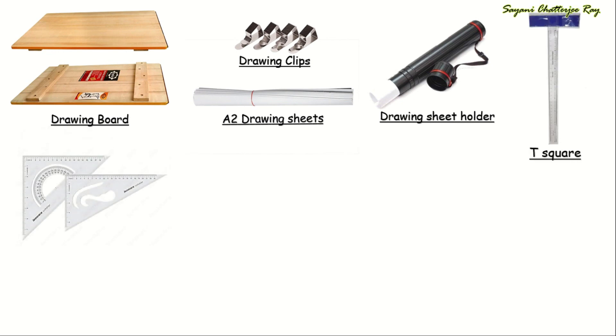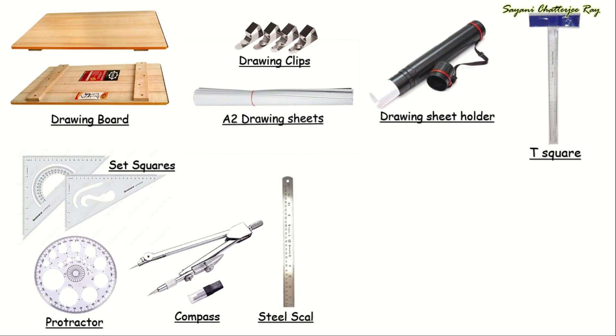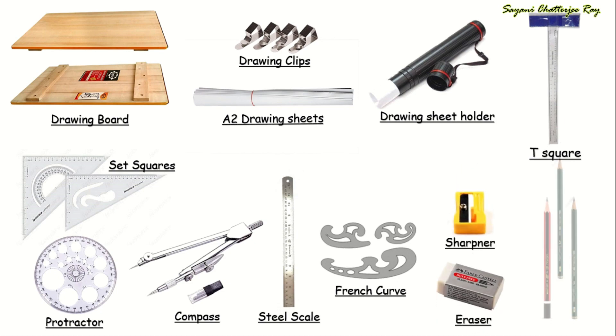The other drawing instruments we require are a pair of set squares: a 45-45-90 degree set square and a 30-60-90 set square. Next is a 360 degree protractor, a compass, a 30-centimeter steel scale, a set of French curves for drawing curves, and a sharpener, eraser, and a set of drawing pencils.